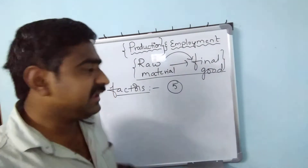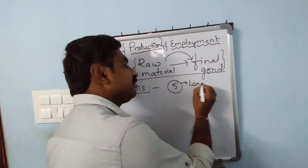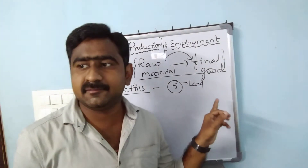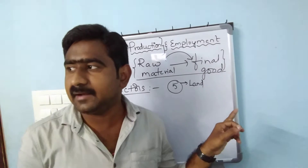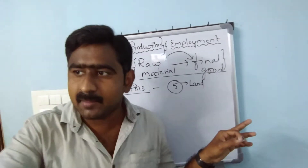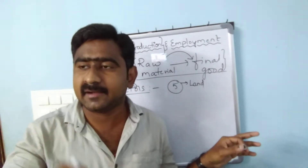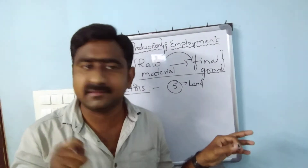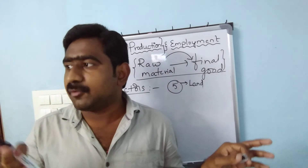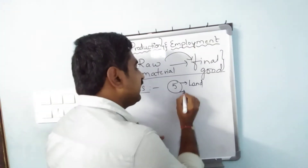The first factor is called land. Land is the first and very important factor for production. If you have raw materials, production is made, industry or factory is made — and all of that requires land. Without land, there will not be an important process for production. The second factor is labor.